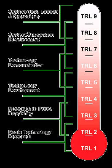TRLs are based on a scale from 1 to 9, with 9 being the most mature technology. The use of TRLs enables consistent, uniform discussions of technical maturity across different types of technology. TRL has been in widespread use at NASA since the 1980s, where it was originally invented.